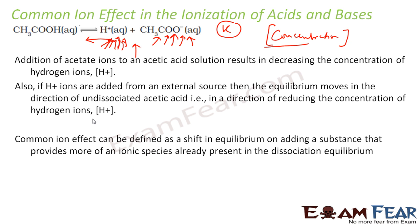So the common ion effect, if we define it, is the effect on equilibrium on adding a substance that provides more of an ionic species already present in the equilibrium. If there are ionic species in the equilibrium and you provide more of those ions, the equilibrium shifts to the left side. If you remove H+ ions, the equilibrium will shift in the forward direction.